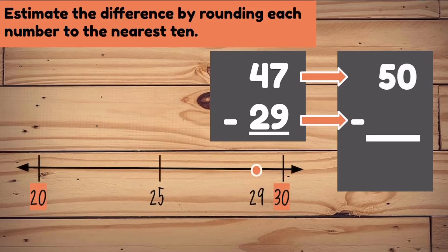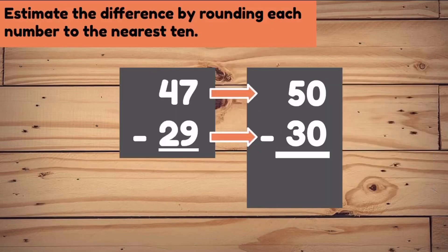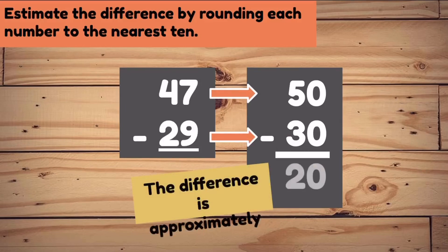29 is surrounded by 20 and 30. But is it closer to 20 or 30? It's way closer to 30, so we know that 29 rounds to 30. Now we can easily subtract 50 take away 30. The difference is approximately 20.